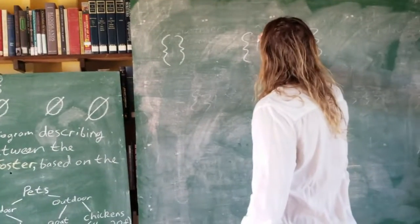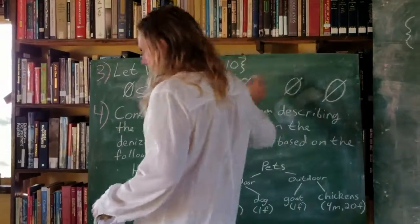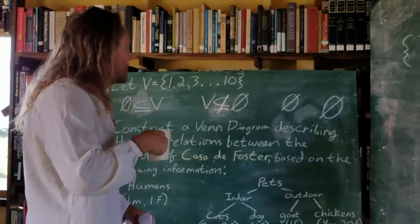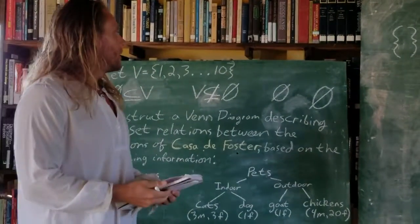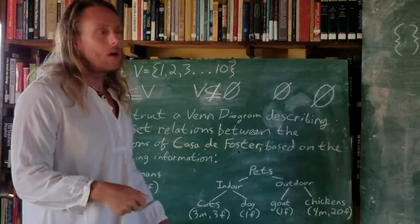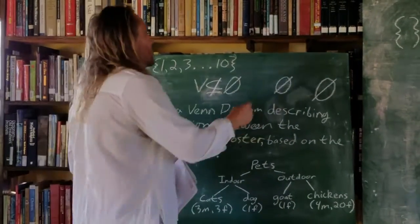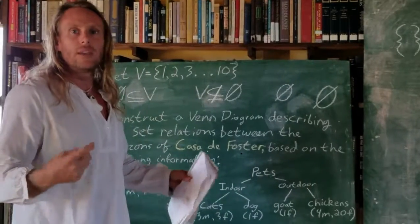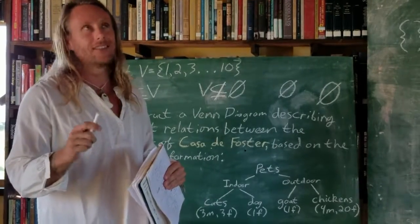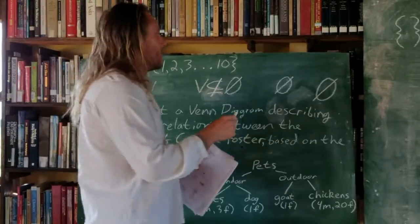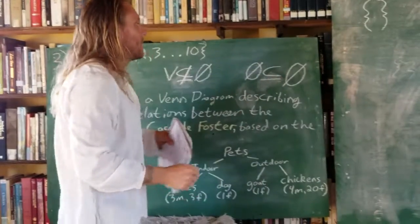Is V a subset of the empty set? For that to be true, all elements in V would have to be present in the empty set. We know there are no elements in the empty set but there are elements in V, so V is not a subset of the empty set. Is the empty set a subset of itself? The empty set is a subset of all sets, so yes. Also, since they are equal sets, each is a subset of the other.